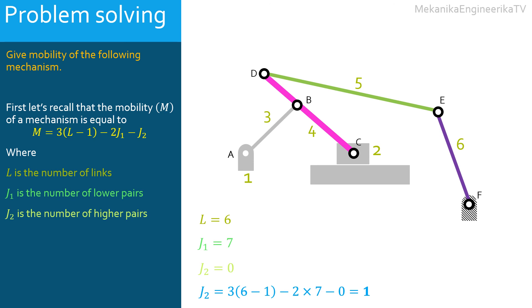Thus, by controlling one link, the bar AB link 3, the motions of all other links - links 2, 4, 5, and 6 - are unique and predictable. This means that the mechanism has only 1 degree of freedom.